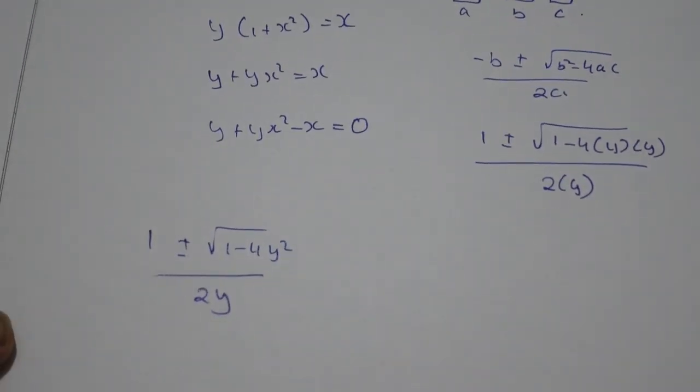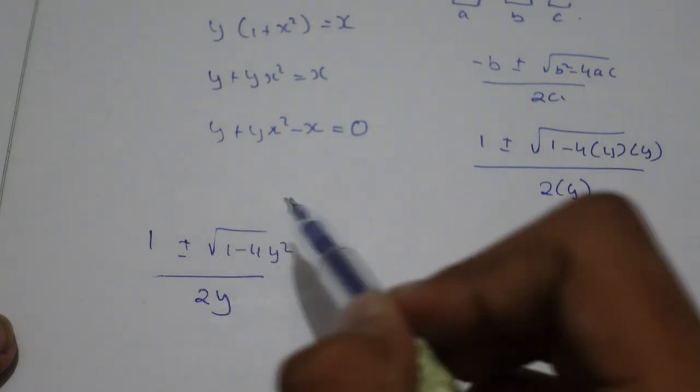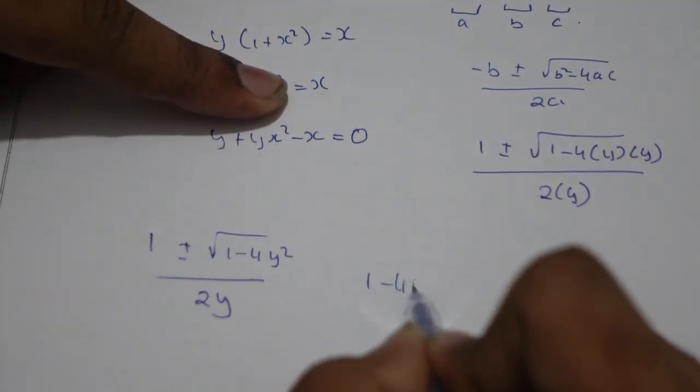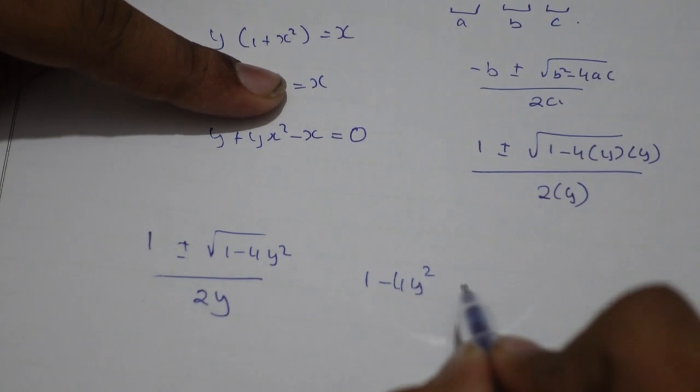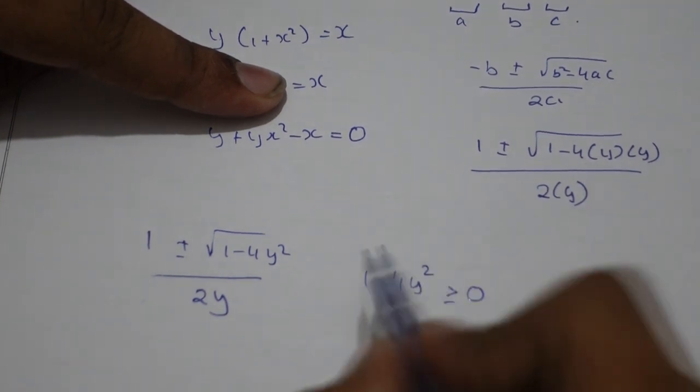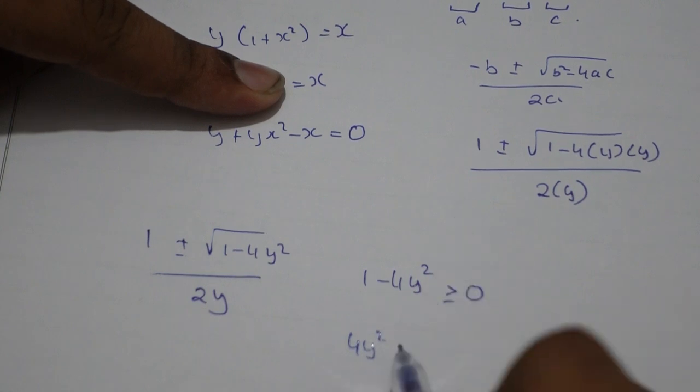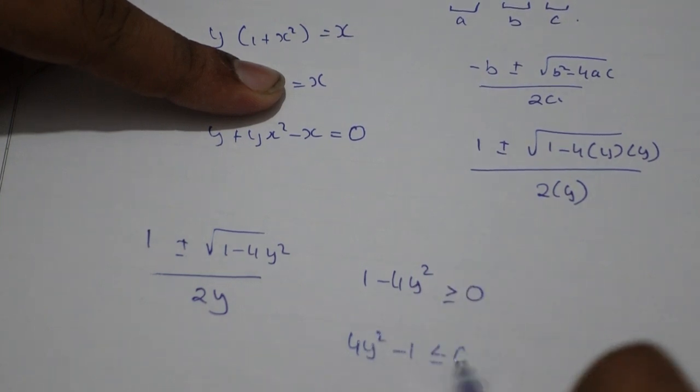Now we know here that any value under the square root has to be greater than or equal to 0. So 1 - 4y² ≥ 0. If I multiply minus both sides, this will become 4y² - 1 ≤ 0.